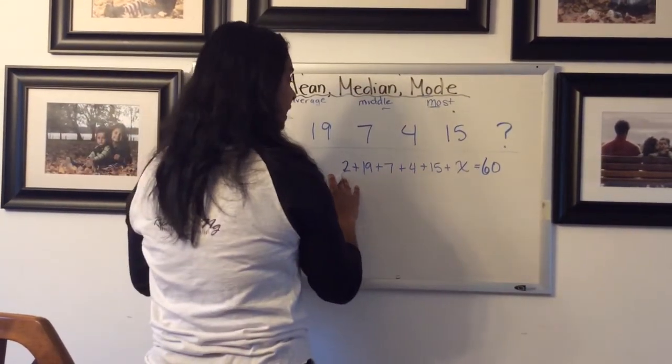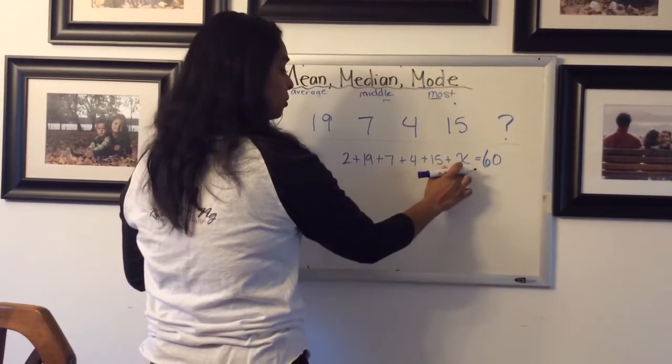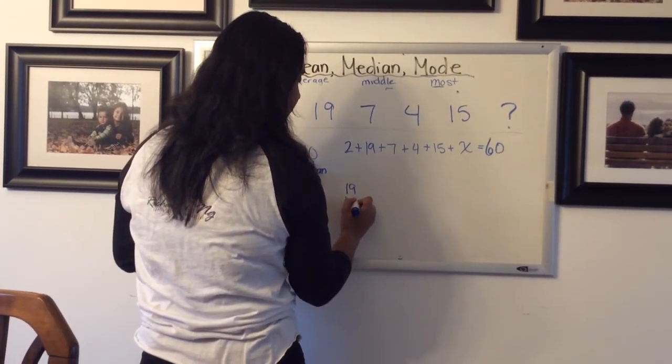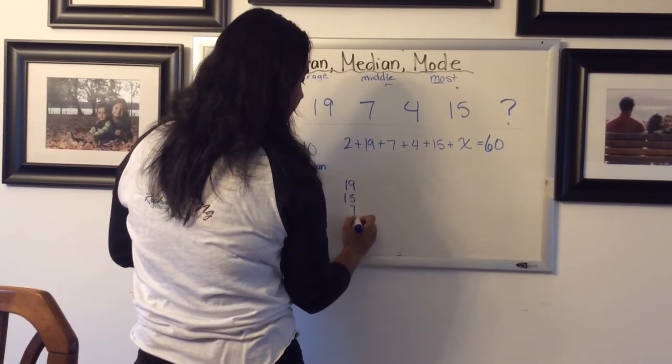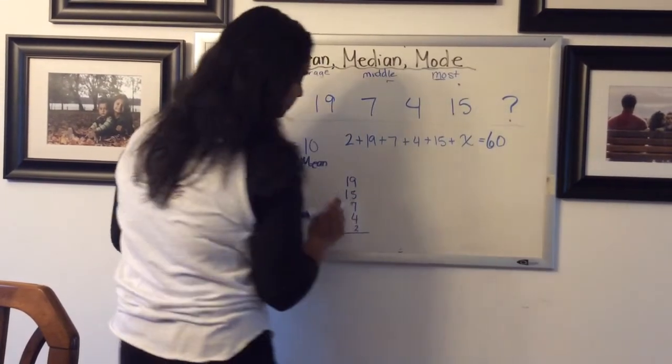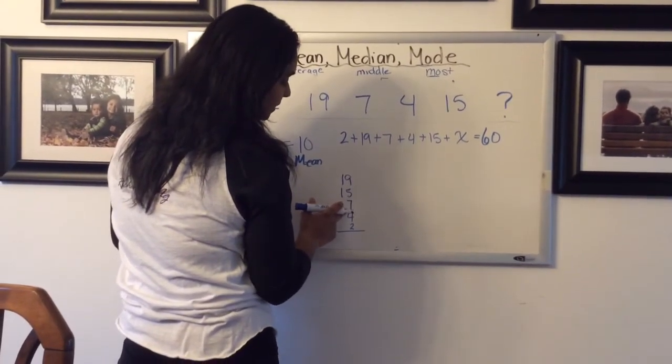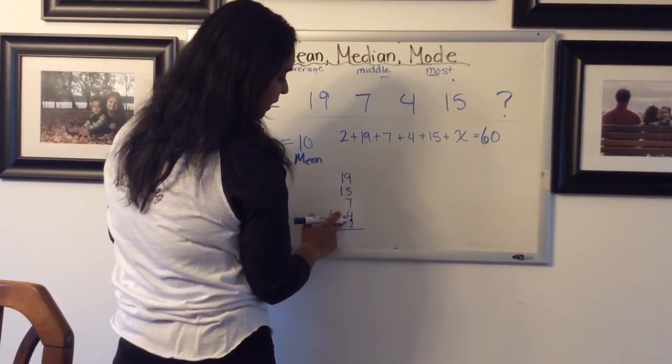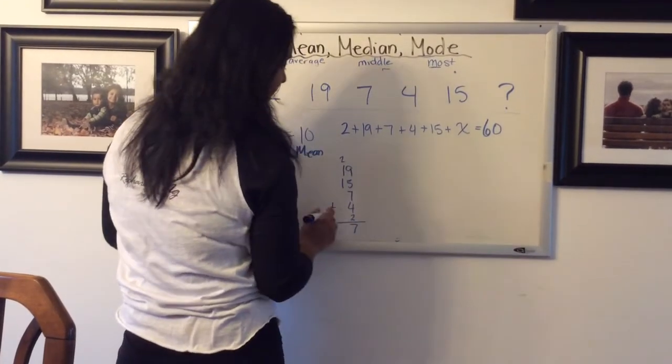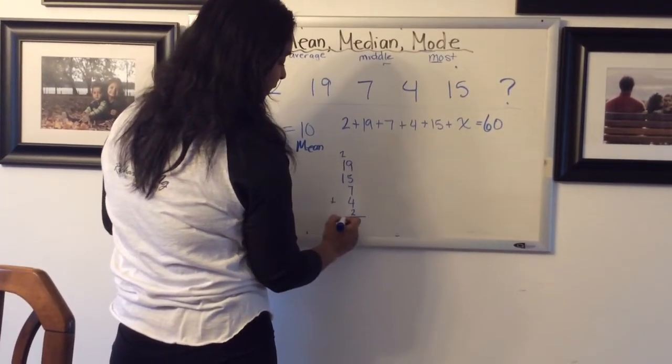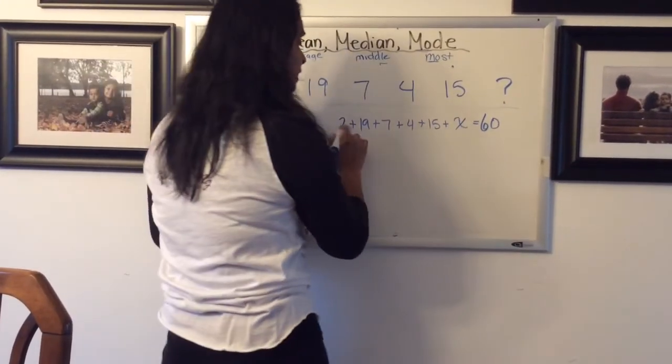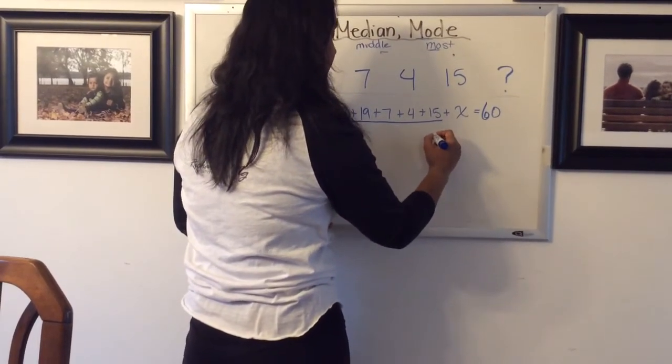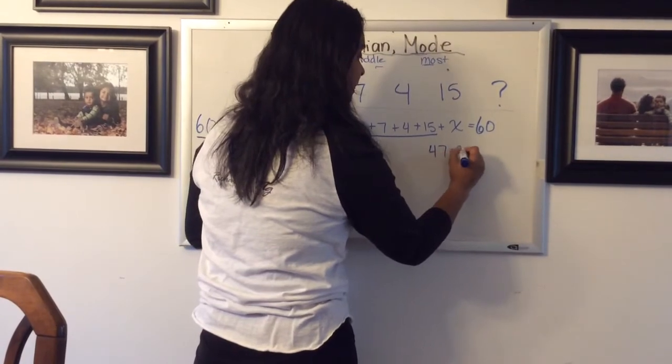So what we want to do is we want to add this all up together. We don't know the value of X, but we can go ahead and add all this together. And I would recommend doing it in a tower, maybe from least to greatest to try and make sure that we are getting the right numbers here. 9 plus 5 is 14, plus another 7 is 21, plus another 4 is 25, plus another 2 is 27. So I'm going to carry those 2 tens. And then I have 2 plus 2 here is 47. So this much here is equal to 47.